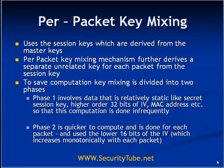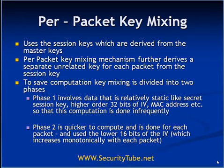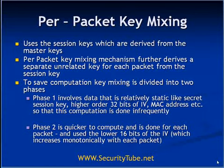Since this phase 1 computation is going to be non-frequent, a more computationally extensive algorithm can be used. Phase 2, which is the frequent key mixing step, should be very quick, so simple addition and shift operations are used. Phase 2 is quicker to compute and is done for each packet, using mainly the lower 16-bit IV which increases monotonically with every packet — starting at 0 for packet 1 and incrementing for every successive packet. This division into two phases reduces the overall computation.